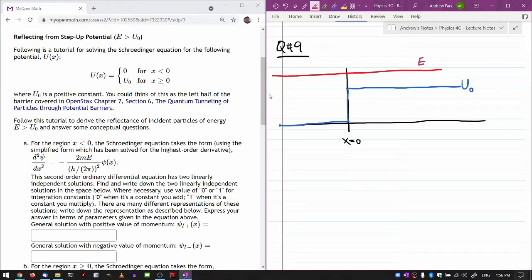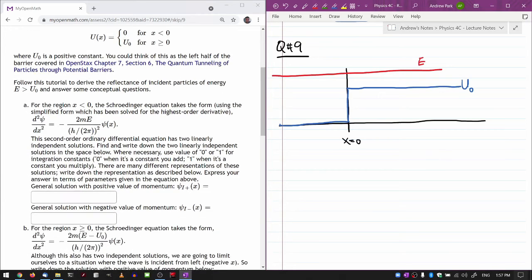For the region x less than 0, the Schrödinger equation takes the form shown. It's been solved for the second derivative and the potential is 0. The second order ordinary differential equation has two linearly independent solutions. If I had to find a solution to an equation that looks like this, second derivative is equal to minus k squared psi of x, then I would stare at this for a while and immediately come up with this solution that I have seen and used in other contexts before, which is this general solution.